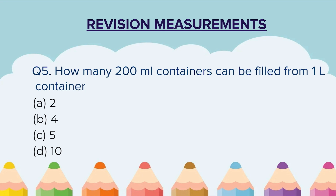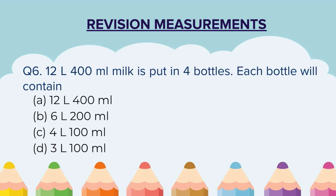Students, I am reminding you again — after every question, please pause the video, solve the question, and then only move on to the next question. Question 6: 12 liters 400 ml of milk is put into 4 bottles. Each bottle will contain — A) 12 liters 400 ml.